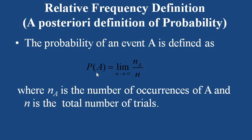As its name suggests, the relative frequency definition relates to the relative frequency with which an event occurs in the long run. In situations where an experiment has been repeated a very large number of times, the relative frequency definition can be applied. This definition is very useful in practical situations where we are interested in computing a probability in numerical form but where the classical definition cannot be applied. This type of probability is also called empirical probability, as it is based on empirical evidence — that is, on observational data.